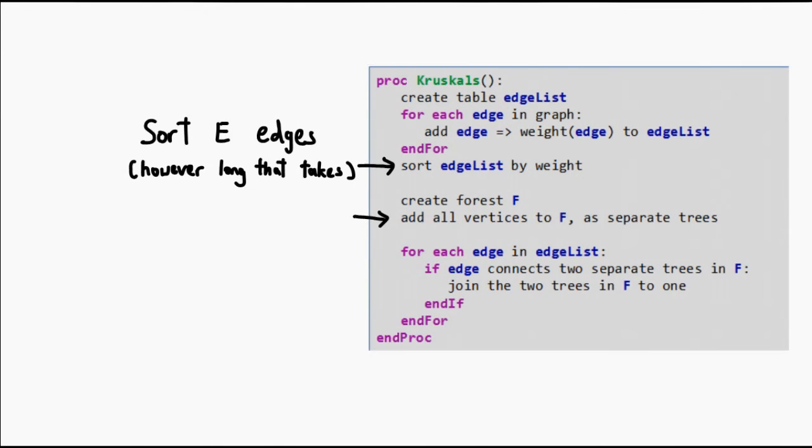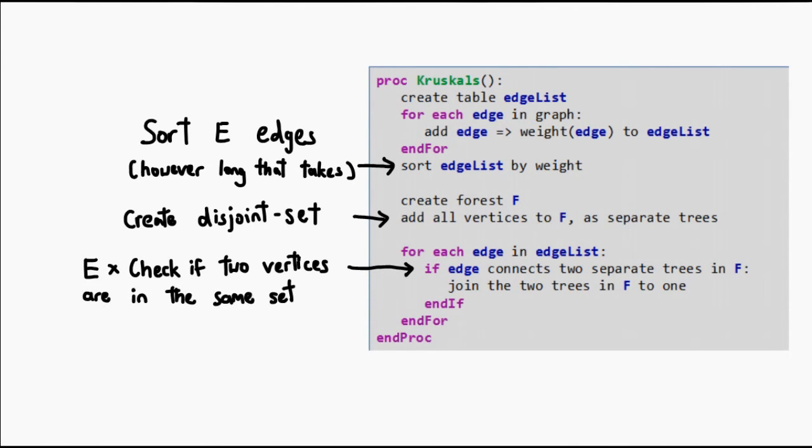The rest of the algorithm is just a bunch of disjoint set operations. First, every time we pick up an edge, we need to trace it to its two connected vertices, and see if they belong in the same set. We need to do this a total of E times.